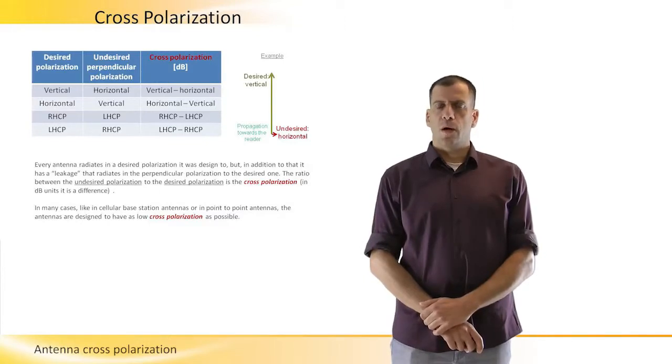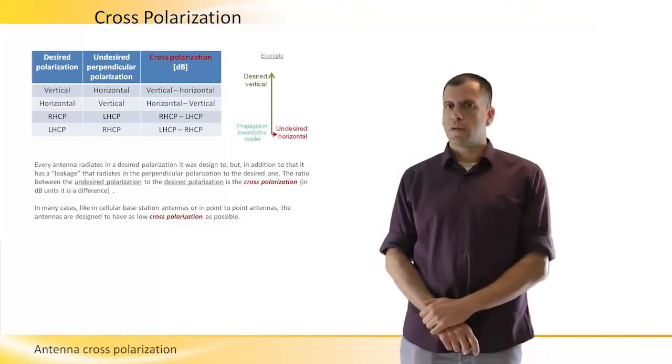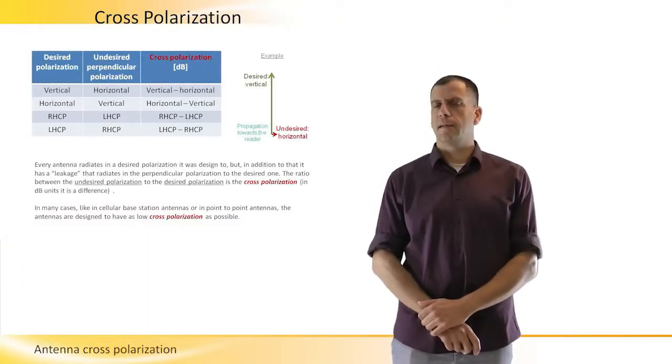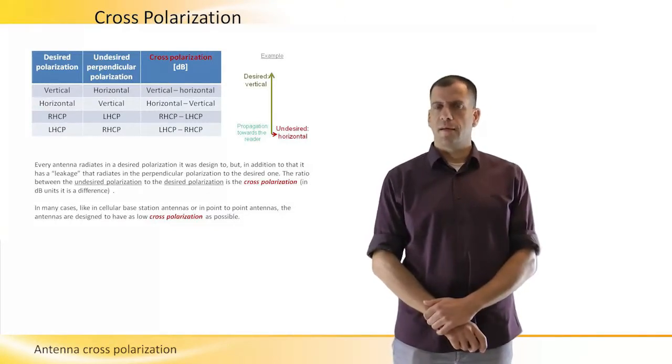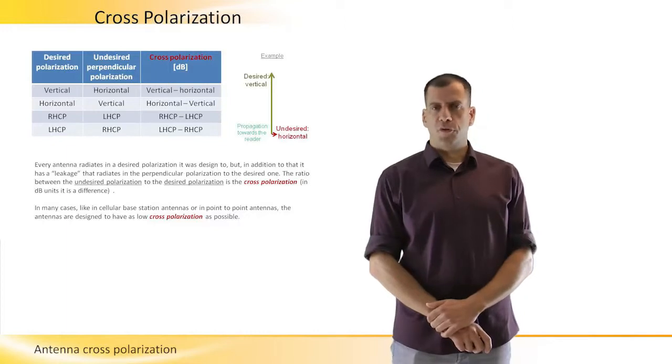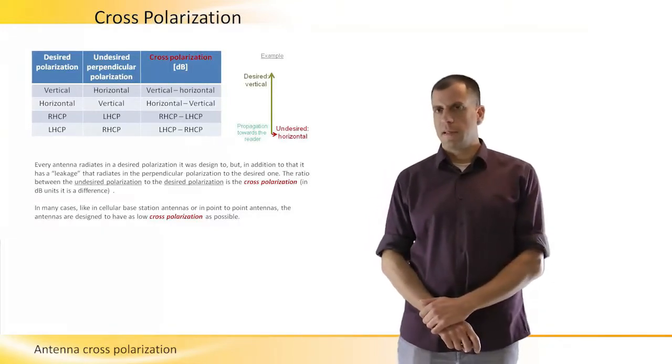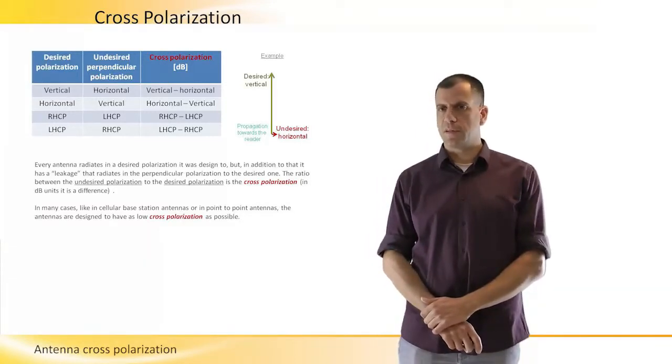So, why do we need it? Why do we want most of the energy to be in our polarization? Of course, if we take an electric field in vertical polarization, then the projection of vertical on horizontal is zero because there is 90 degrees between the two vectors.